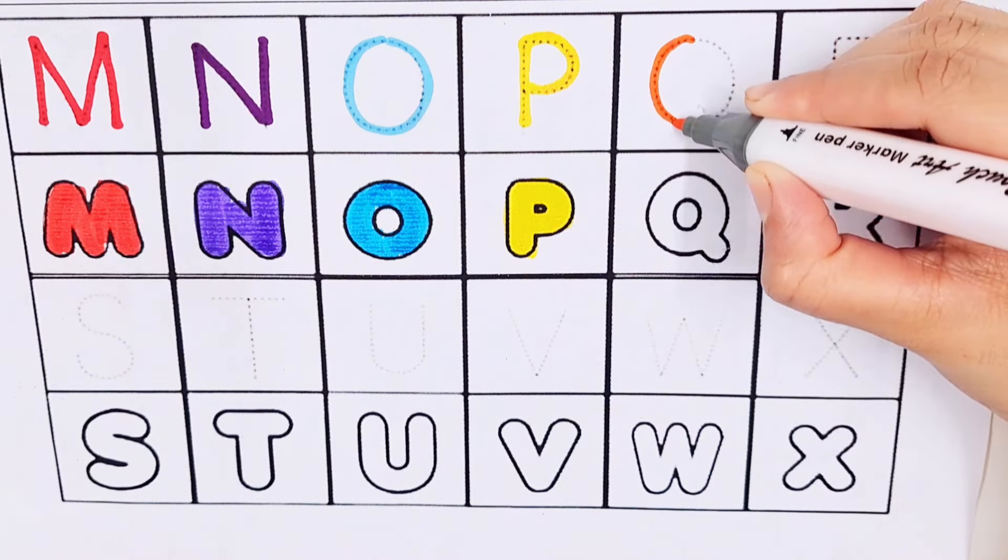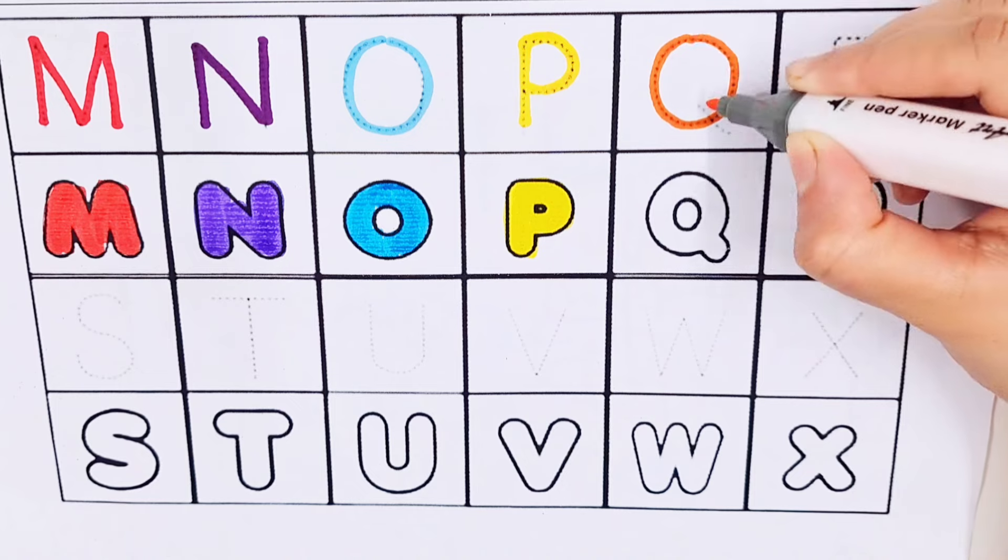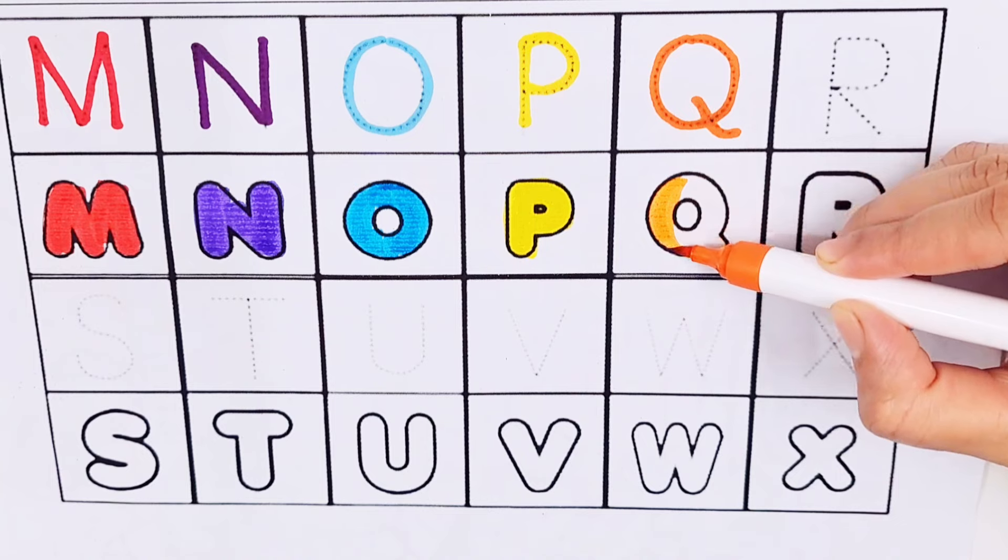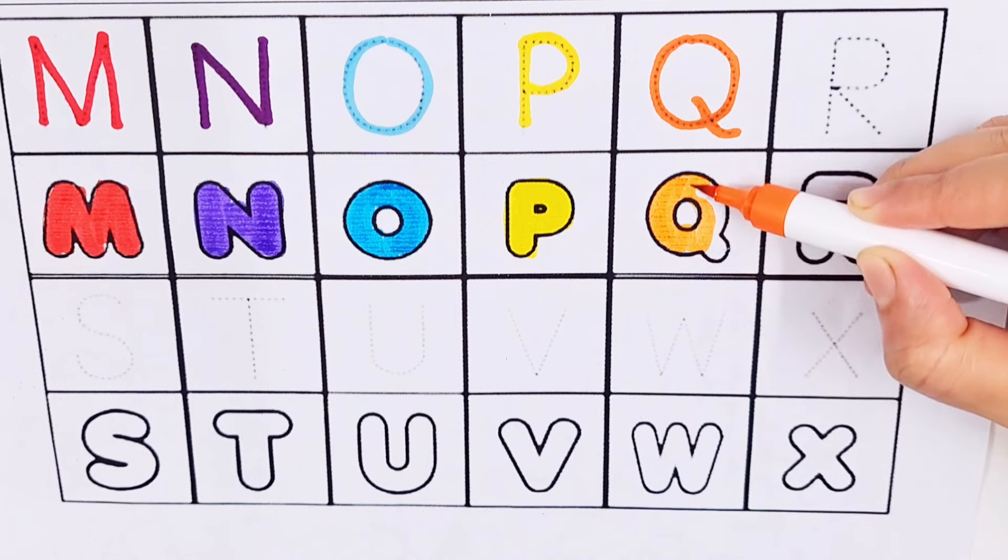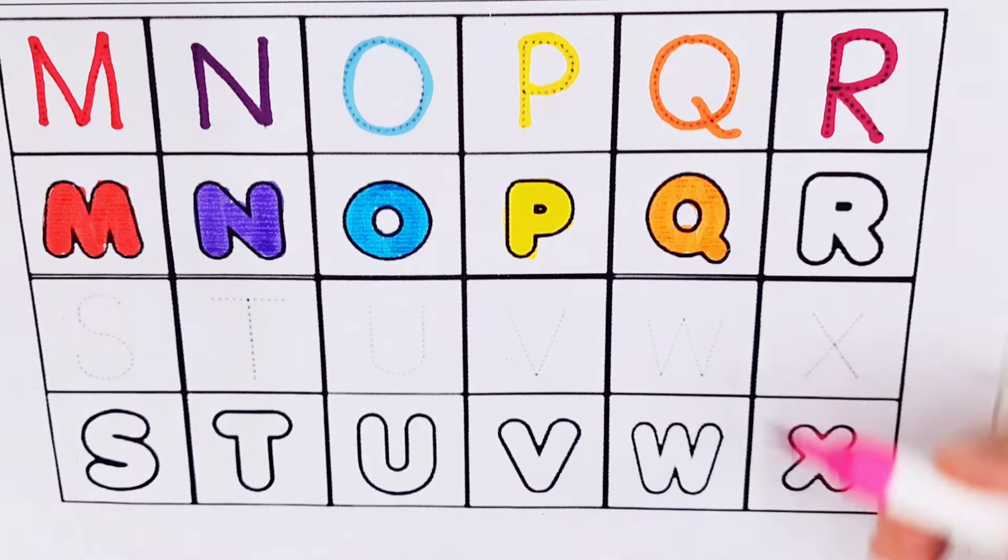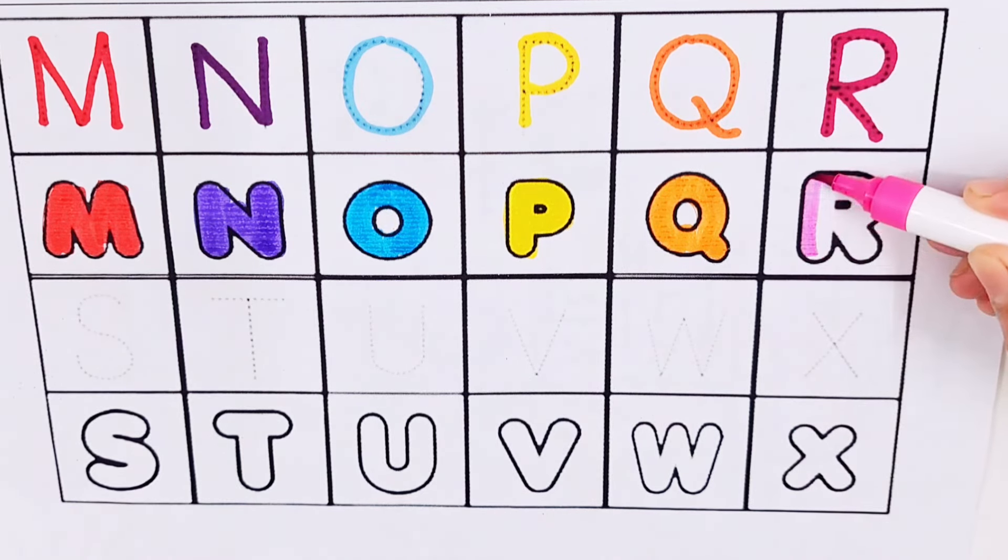Q, Q for question, Q for quilt. R, R for rainbow, R for rain.